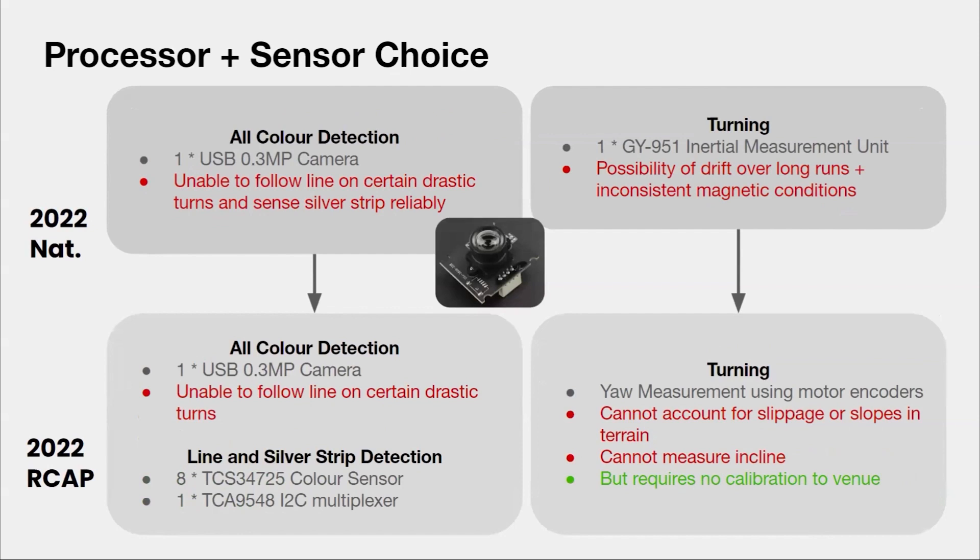After trying this setup out at Nationals, we found some flaws. The camera provides very smooth line tracking, but is unable to perform certain tasks reliably. Hence, we decided to offload these tasks to an array of color sensors at the bottom to handle edge cases, controlled via I2C with a multiplexer. The IMU ended up being less reliable due to inconsistent magnetic conditions throughout the rescue map. The magnetic interference would be added to the existing drift, making it hard to turn consistently. So we ditched it and chose to use our motor encoders to calculate the yaw of our robot. This approach has downsides, such as being unable to account for slippage and uneven terrain, but we found they were not a problem and required much less effort to calibrate.